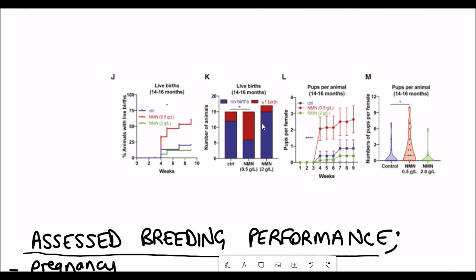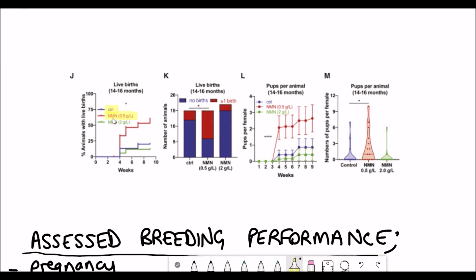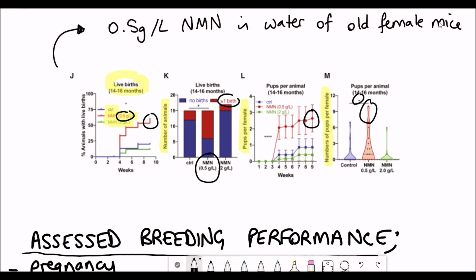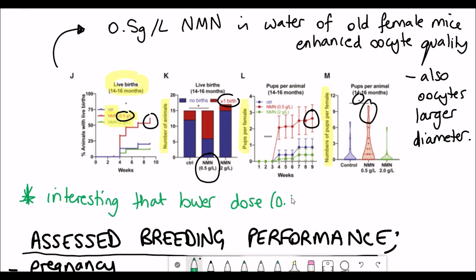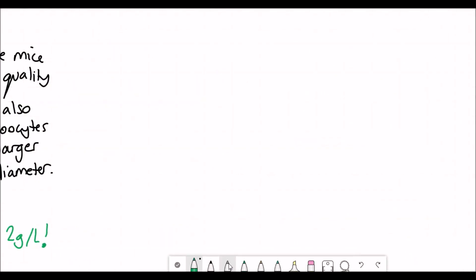It kind of matches the levels seen in young mice. But does this actually make a difference to oocyte quality? They assessed the breeding performance of older mice who had been taking NMN by looking at pregnancy, number of live births, litter size, and also spindle assembly and chromatid alignment, which is critical for cell division.